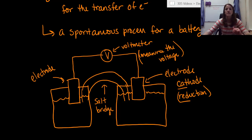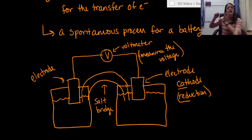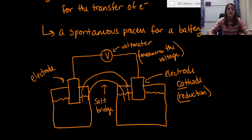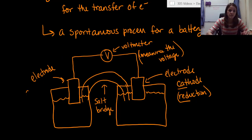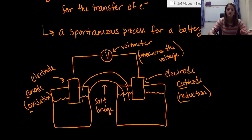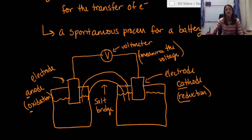Some people remember this as 'red cat' — reduction at cathode. Cathode, right side, always reduction. On the left side, the electrode is what's called an anode, and an anode is always where you have an oxidation reaction. Some people think the A's and O's go together — anode/oxidation — and then red cat on the other side.